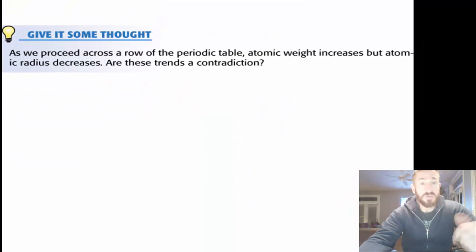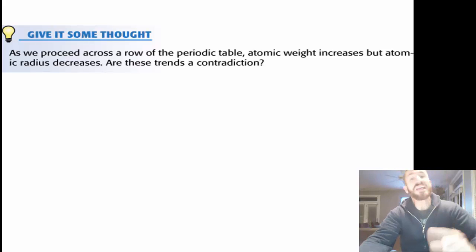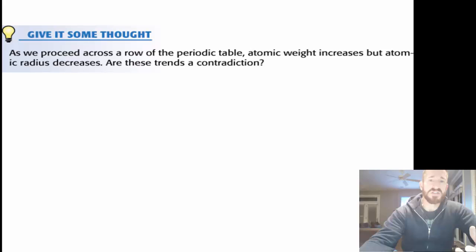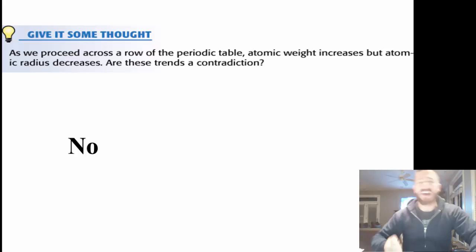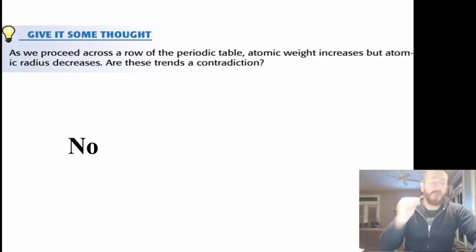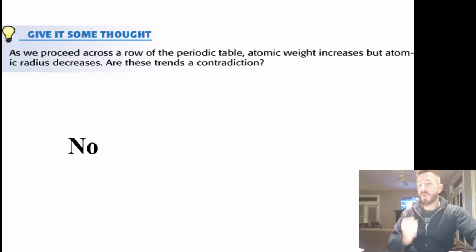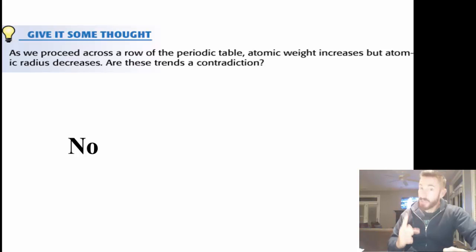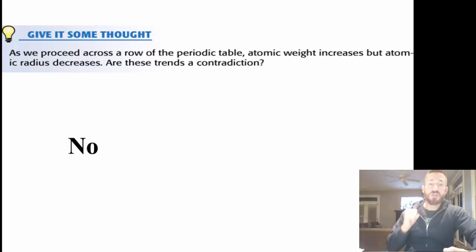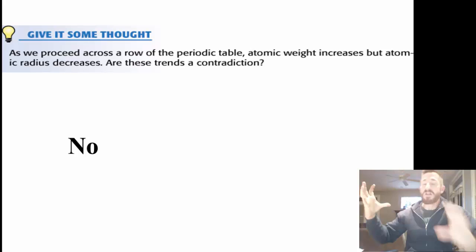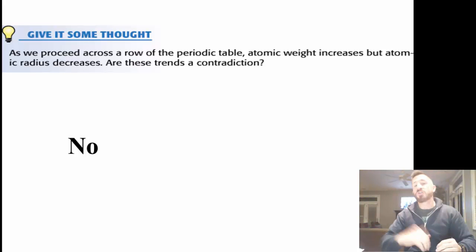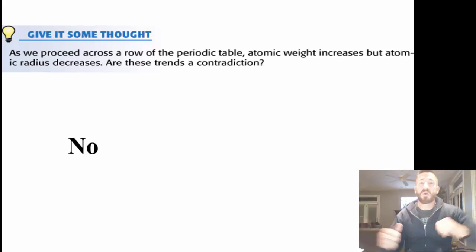As we proceed across a row of the periodic table, atomic weight increases but atomic radius decreases. Are these trends a contradiction? Absolutely not. Weight comes from the nucleus, so as you go to the right, you're making the nucleus heavier. You're adding electrons that aren't shielding, so that nucleus with more protons is able to pull the electron cloud in closer and closer. Due to effective nuclear charge, atoms get smaller and smaller in a row.